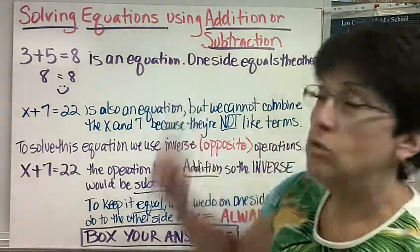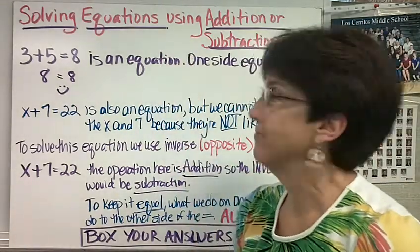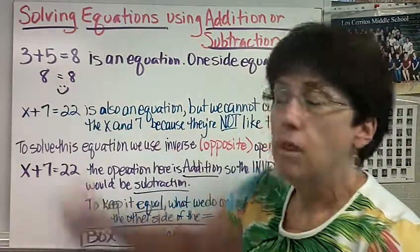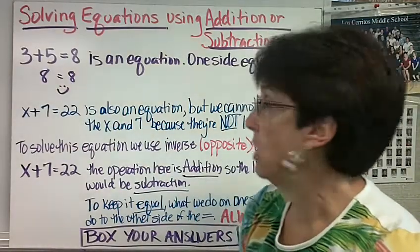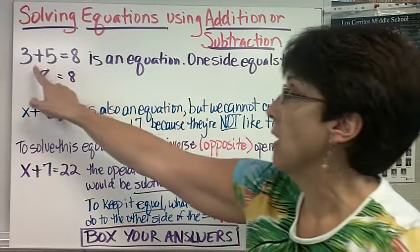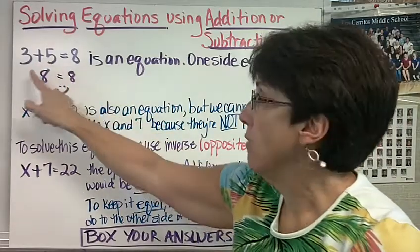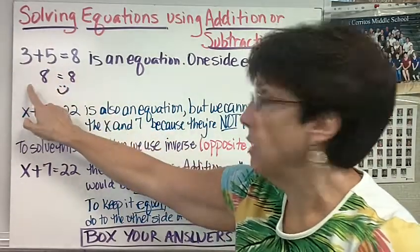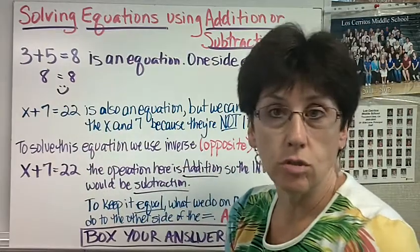Solving equations using addition or subtraction. Well, 3 plus 5 equals 8 is an equation. One side equals the other side. If we add 3 plus 5, we get 8. 8 equals 8. You've been doing those a long time.